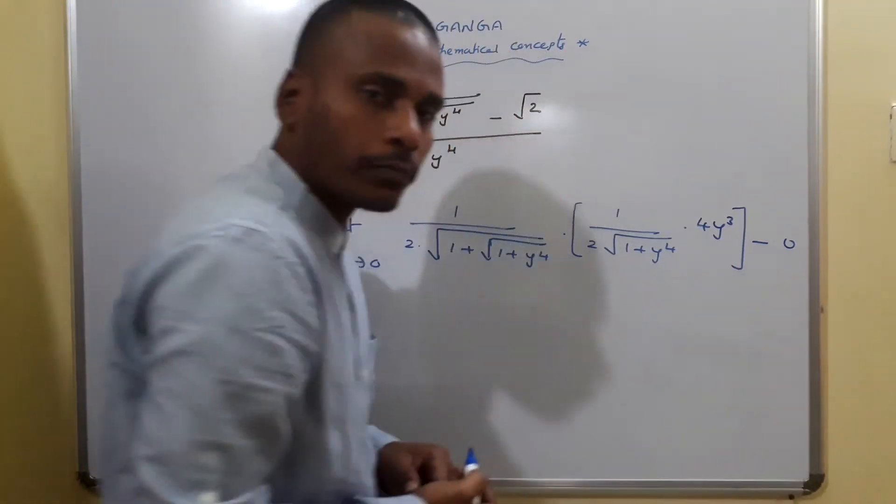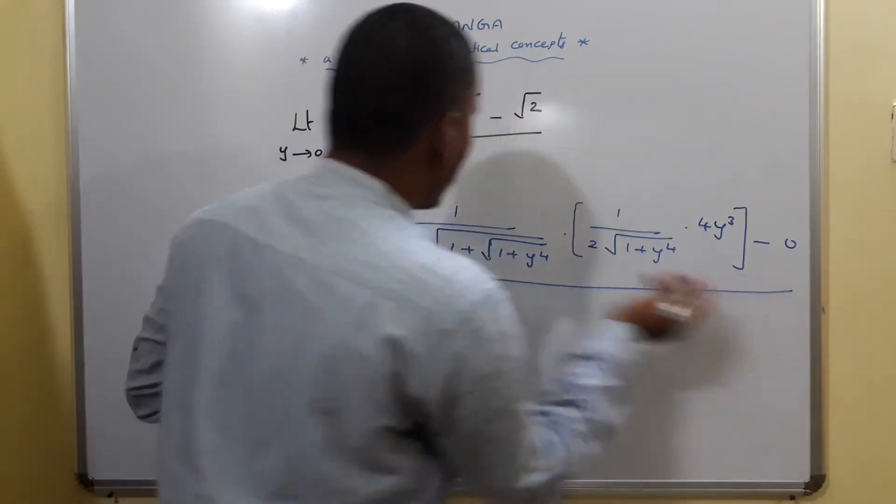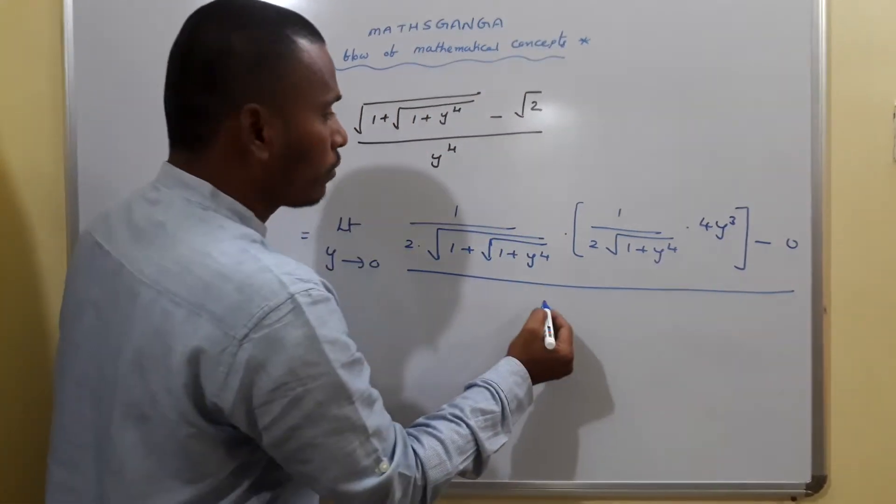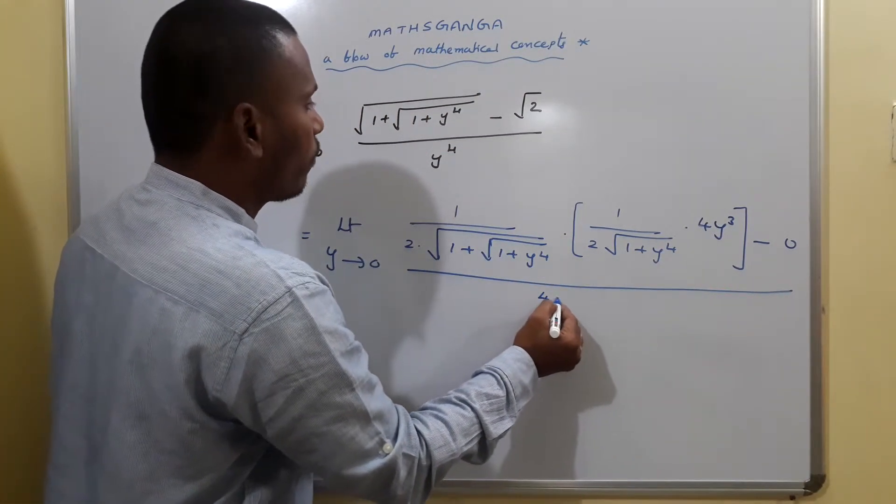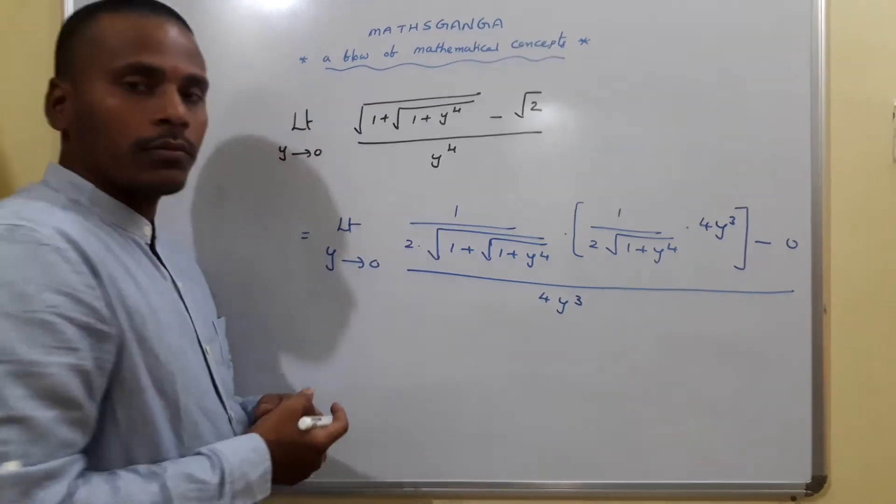So this is 4y cube minus root 2, the derivative is 0, divided by the derivative of y power 4 which is again nothing but 4y cube.